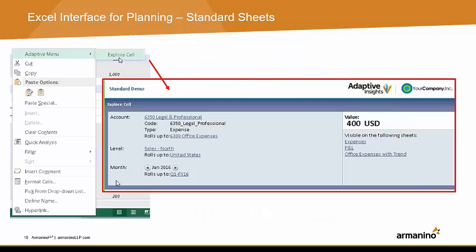If you right-click on the cell, you will see all of your usual Excel options, but you will also see an Adaptive-specific menu that will change from cell to cell. This example has the ability to explore cell. If you click on this option, you will see the pop-up window that you would see if you were in Adaptive, including drill-down capabilities. If you have transaction data, you'll be able to drill into that information as well.